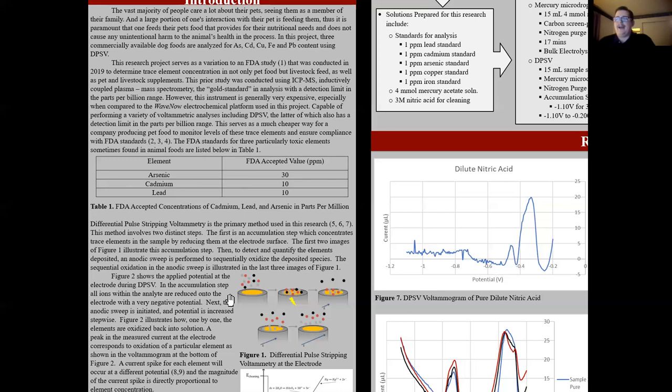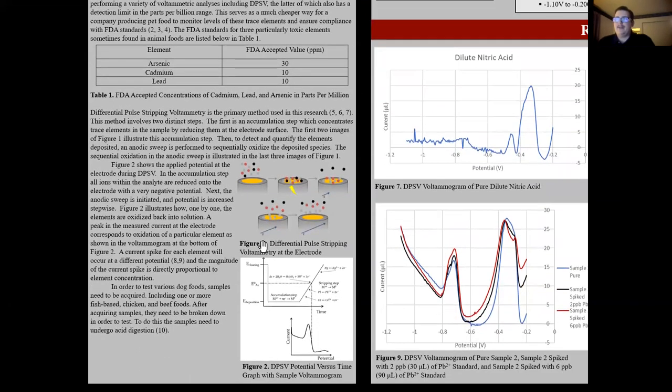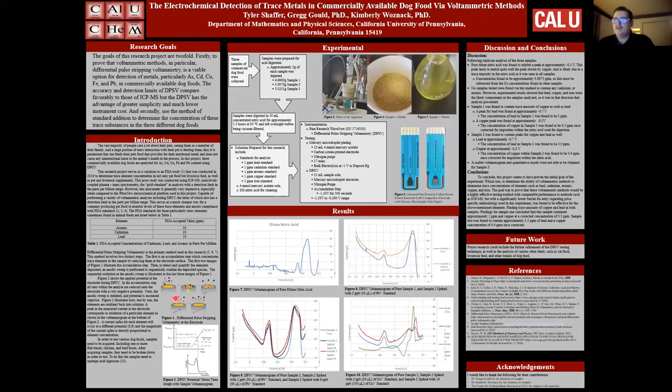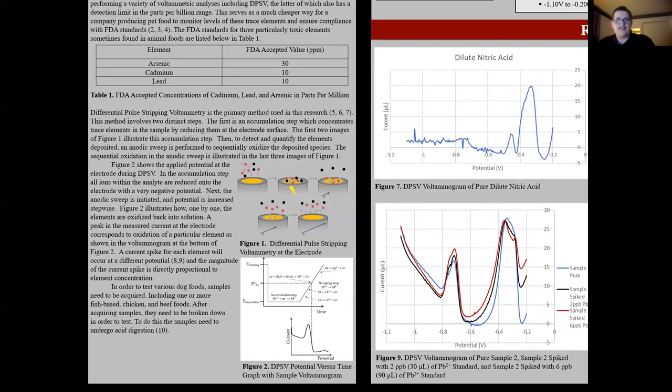Now let's talk a little bit about how DPSV works. In figure one, you can see a sample image of an electrode. You can see ions in solution in this first image, and then you can see these ions being plated to the electrode. Following that, you can see each of these metals being oxidized back off the electrode one by one. You can see the row of black dots moving and then the row of red dots as potential is increased.